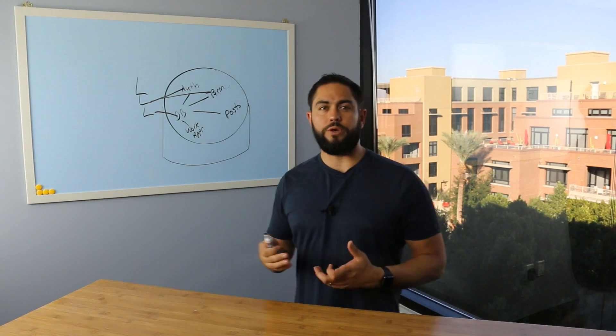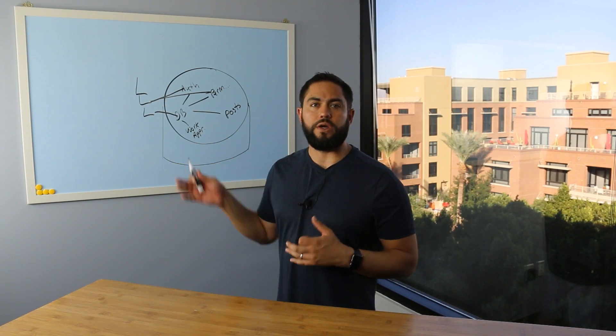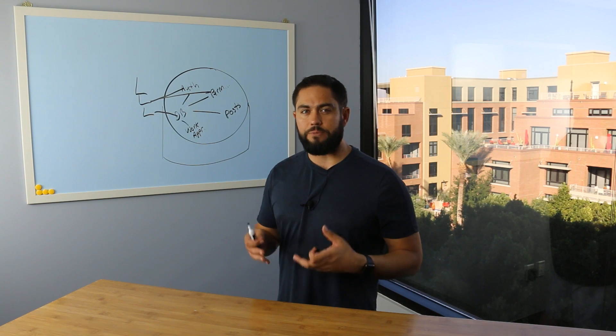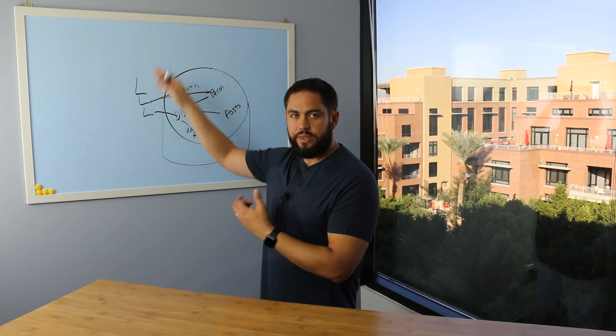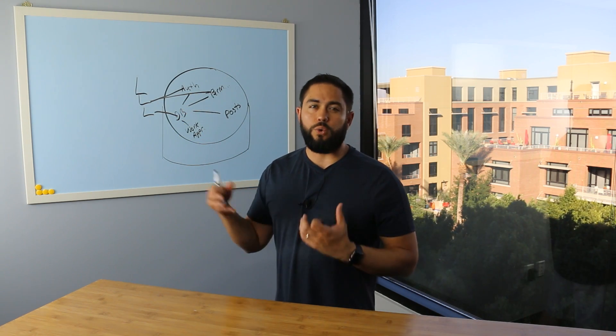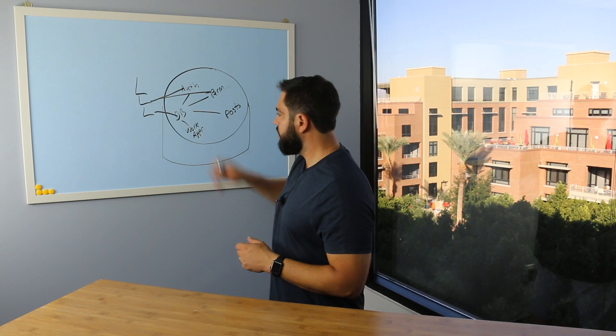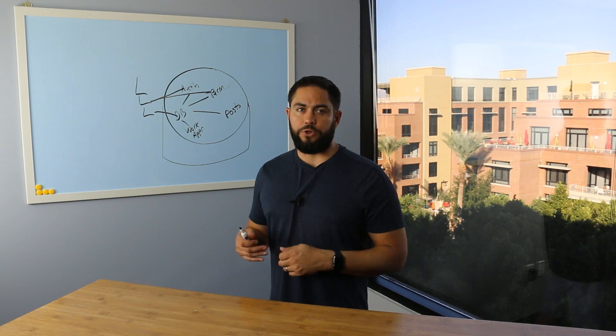If you're used to building Ruby on Rails applications, this might look very familiar to you because it's the way a Rails app is built by default where you have one set of files and they all communicate with each other. When you want to build a new feature, you run a generator or you create more files and that's the way that you build a monolithic application.